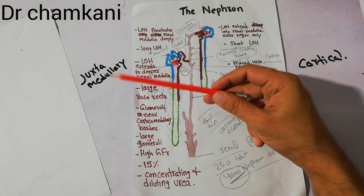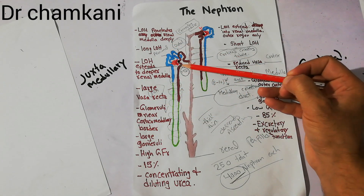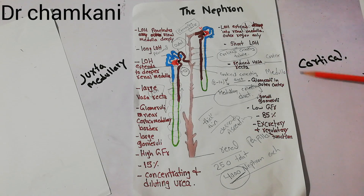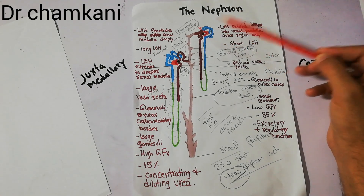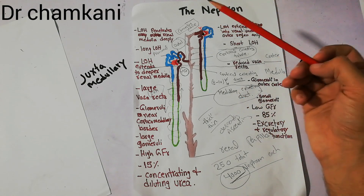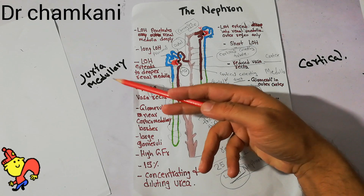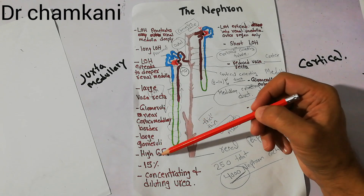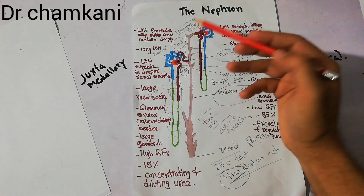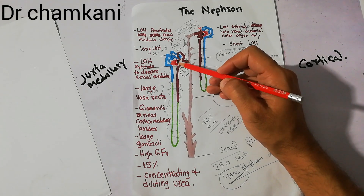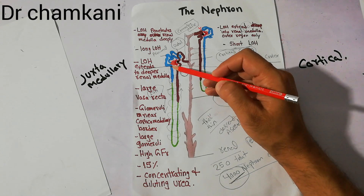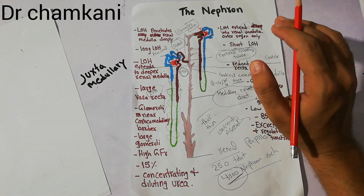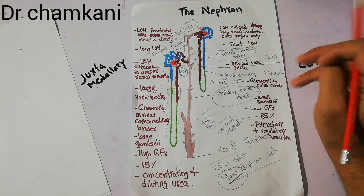Another difference is that juxtamedullary nephrons have large glomeruli. The glomeruli of these juxtamedullary nephrons are quite large while the glomeruli of the cortical nephrons are small. The glomerulus is a bunch of capillaries filtering fluid into the Bowman's capsule. Due to larger glomeruli, juxtamedullary nephrons have a high GFR — glomerular filtration rate. These glomeruli filter the plasma and the filtrate moves through the tubules to become urine. Cortical nephrons have small glomeruli and low GFR.